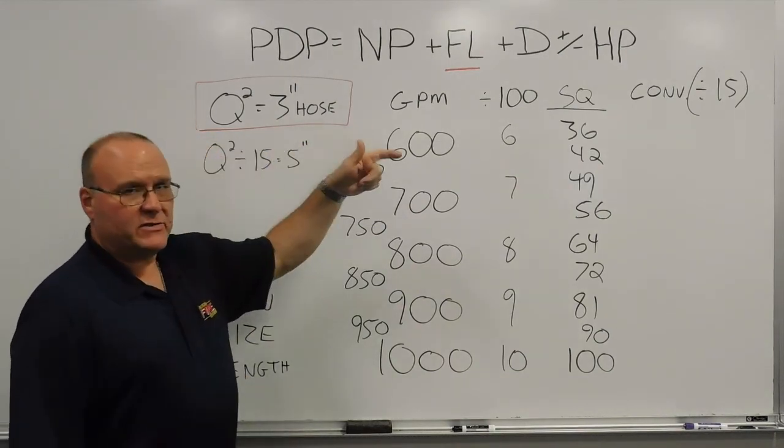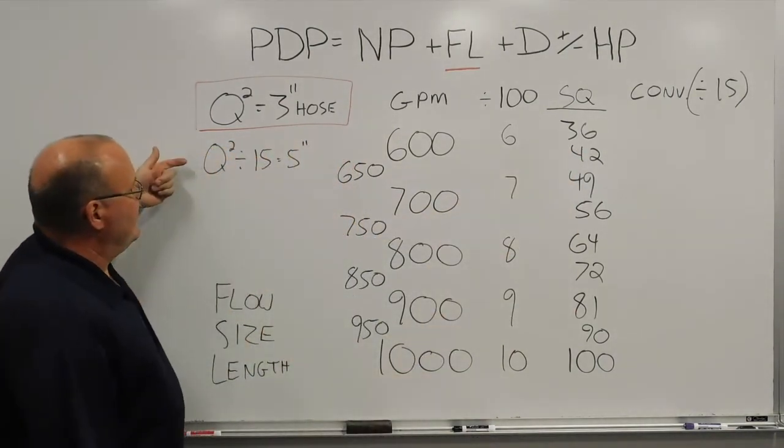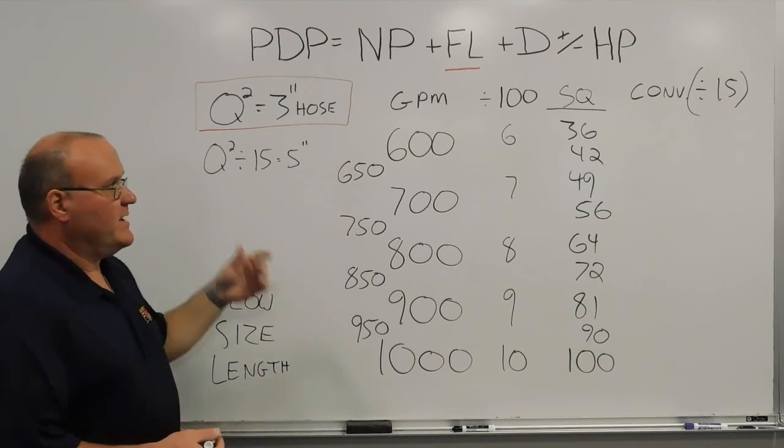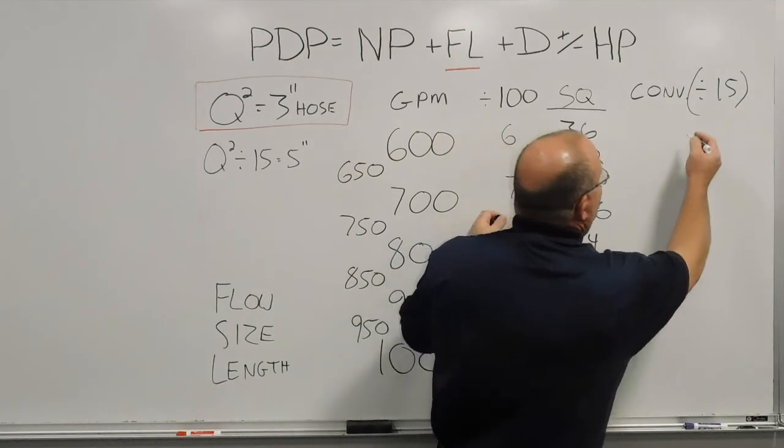Now to convert that to 5 inch hose, I take that 36, and I divide that by 15. So for 36 pounds of friction loss divided by 15, you're going to have just over 2 pounds of friction loss in 5 inch hose.